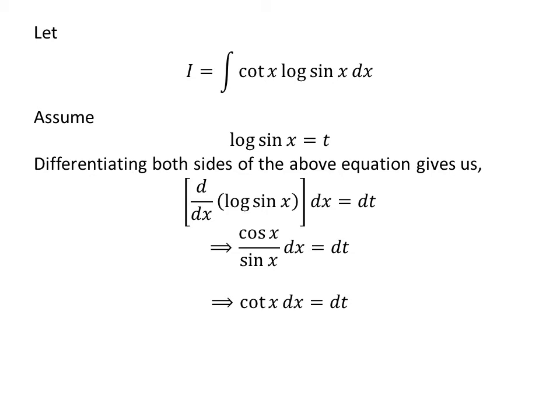Cosine of x upon sin of x is equal to cotangent of x. So, cotangent of x times differential of x is equal to differential of t.